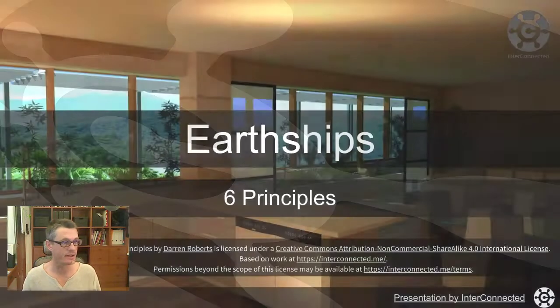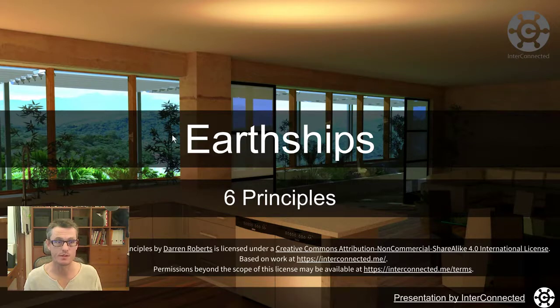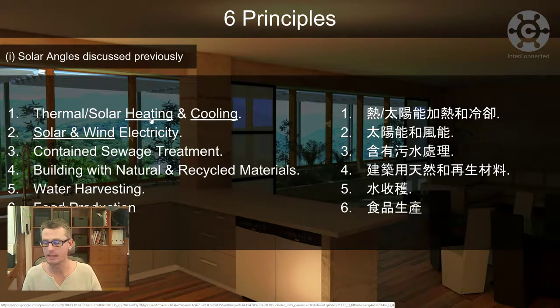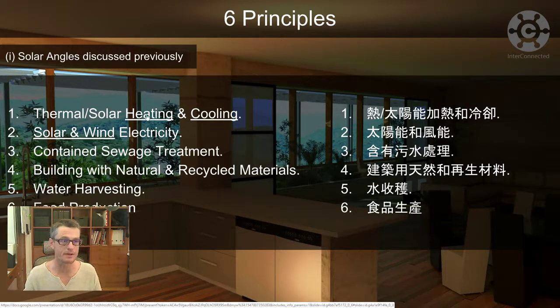We're going to have a look at the six Earthship principles. We're just going to cover principle one here. Solar angles were discussed previously at the meeting at the EcoHome. You can grab that from this presentation. I'll drop it in the appendix at the bottom. This is available on the website and I think it's live on Google Drive. I've published it as a web page as well.